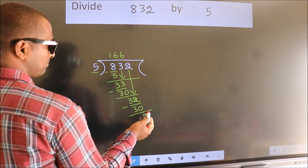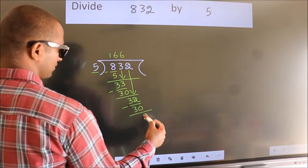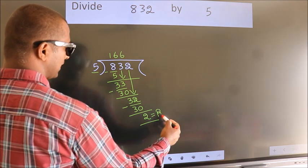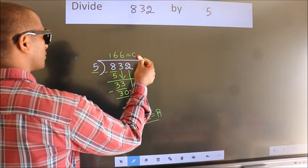No more numbers to bring down. So we stop here. This is our remainder. This is our quotient.